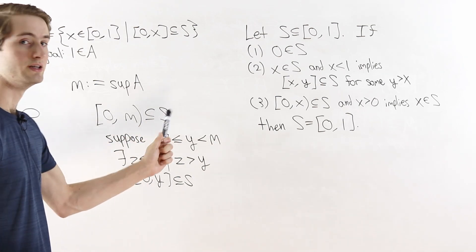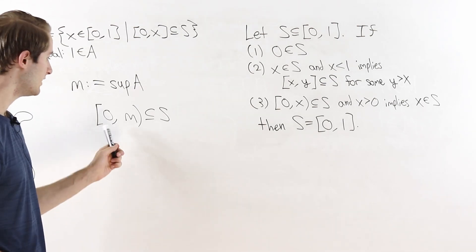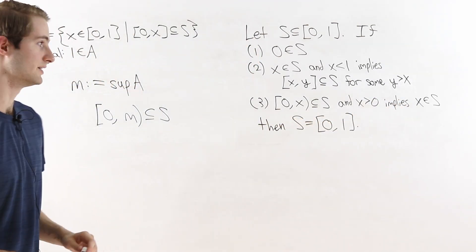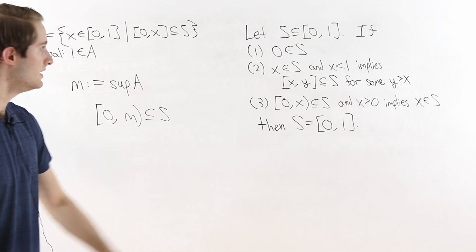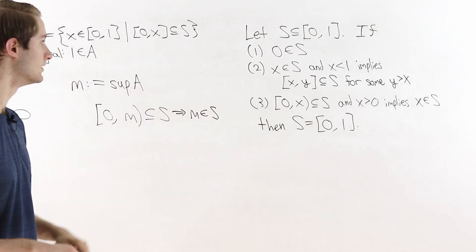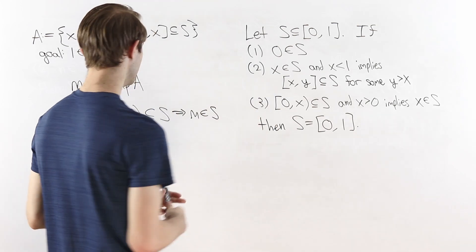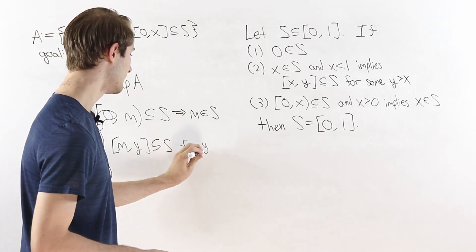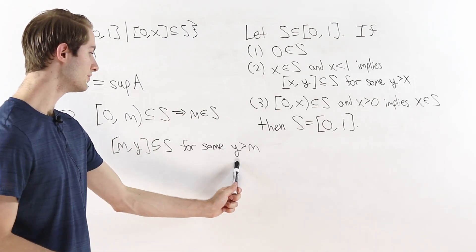Now by the third condition of real induction, if the half-open interval from zero to m is a subset of S, then the endpoint m itself has to be in S as well. If m equals zero then zero is in S by the first condition. Either way, m is in S. From here we can use the second condition: if m is in S and m is less than one, then some closed interval [m, y] has to be a subset of S for some y greater than m.